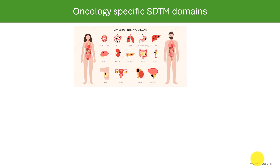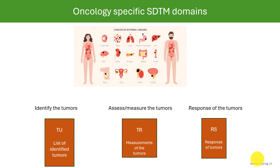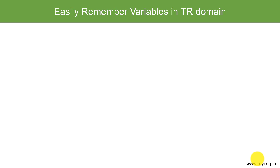In an oncology clinical trial, we first identify the tumors present in the body of a patient, then we assess or measure those tumors, and then we identify the response of those tumors to our study treatment. The domain in which we store the list of identified tumors is the TU domain. The domain in which we store the results or measurements of those tumors is TR, and the response of those tumors is stored in the RS domain.